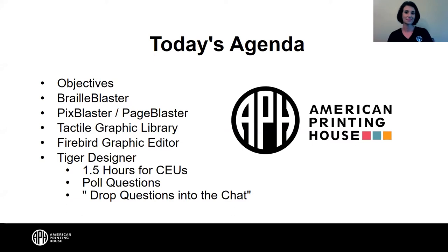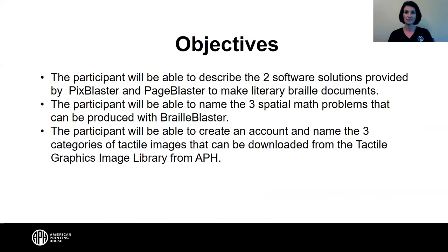We will provide poll questions and encourage you to drop your questions into the chat. We'll try to answer those as we go along and pause to let William and Sally answer them. Our objectives today are: participants will be able to describe the two software solutions provided by PixBlaster and PageBlaster to make literary Braille documents, name the three spatial math problems that can be produced with BrailleBlaster, and create an account and name the three categories of tactile images downloadable from APH's tactile graphic image library.